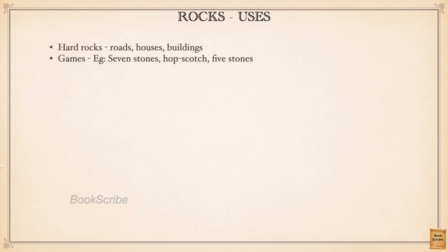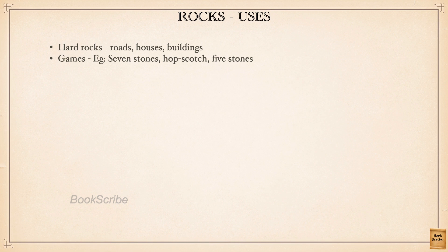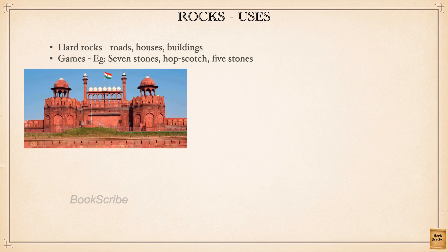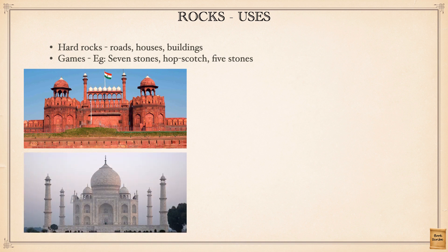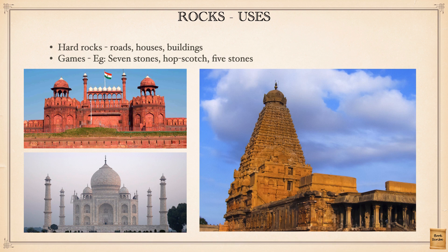There are many uses for rocks. Some rocks are very hard and some are comparatively softer. Hard rocks are used to make roads, build houses, and buildings. We might also have used them in games like seven stones, kithu or hopscotch, stapu, and five stones or giti. There are many monuments built using different types of stones — for example, our Red Fort is made of red sandstone, the Taj Mahal is built using white marble, and the thousand-year-old Chola temple in Tanjavur has an 80-ton stone in its gopura.